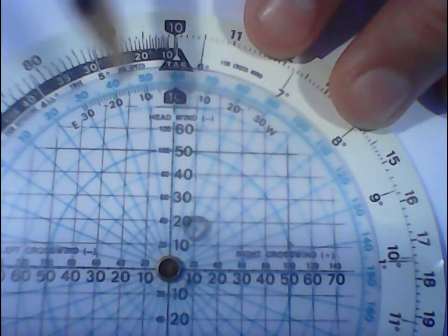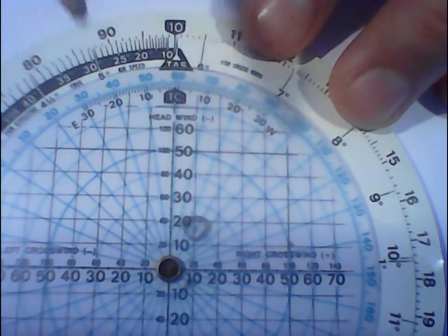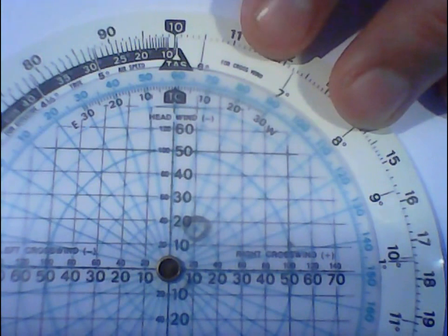So we need to adjust 6 degrees, instead of heading 090, we need to head 096. Because that way we'll be heading further to the right and we'll get blown back to 090.